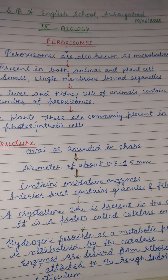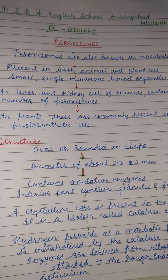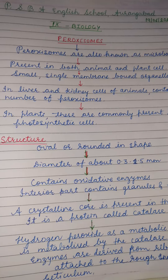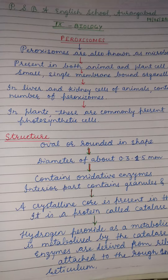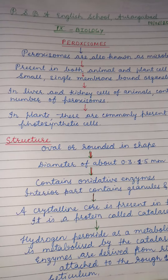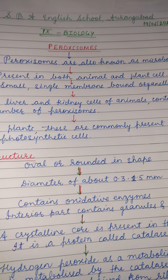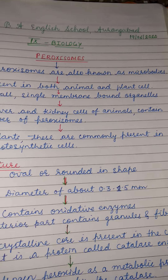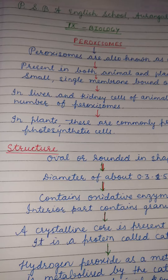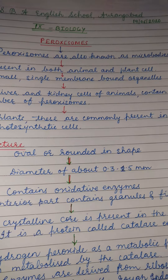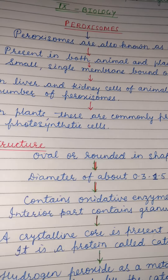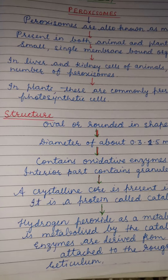Peroxysomes are also known as micro bodies. They are present in both animal as well as plant cells. They are small, single membrane-bound organelles. In liver and kidney cells of animals, they contain a number of peroxysomes. In plants, they are commonly found in photosynthetic cells.